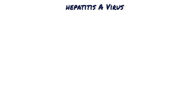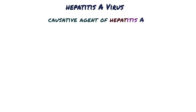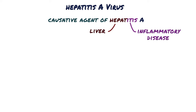The Hepatitis A virus is the causative agent of Hepatitis A. Hepatitis comes from the word 'hepat,' meaning liver, and the suffix '-itis,' to label inflammatory disease, meaning that hepatitis is an inflammation of the liver.